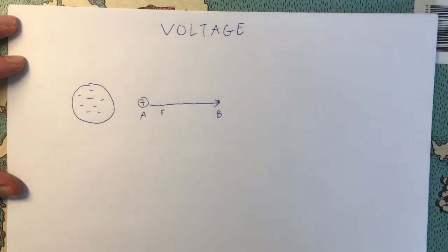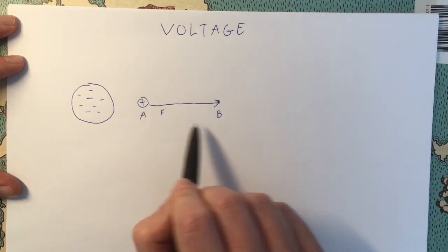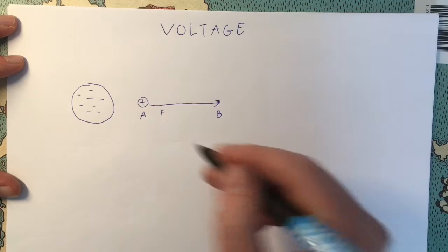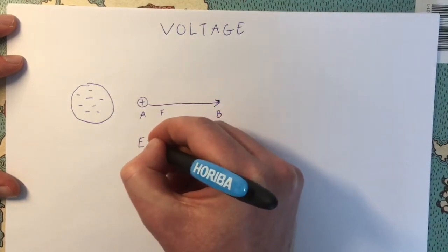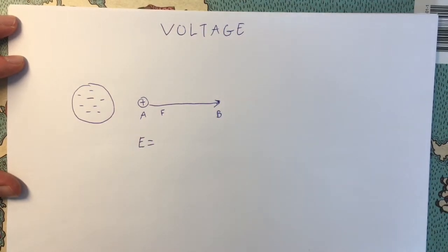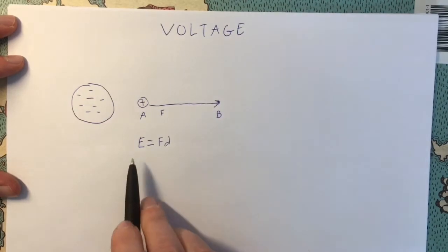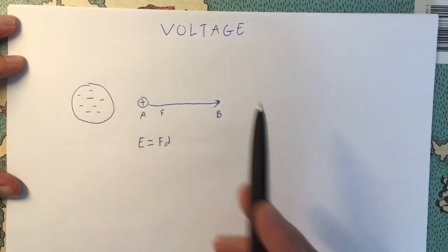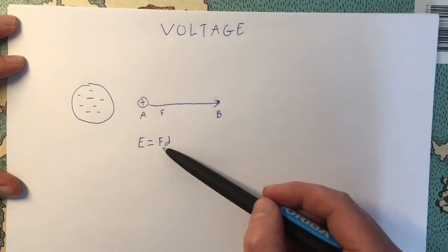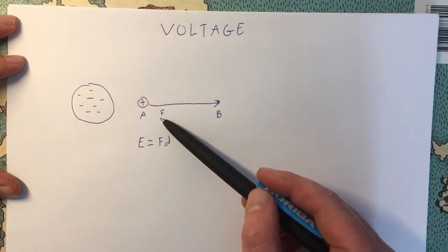In moving this positive charge, we're exerting a force over some distance, so we know that we're going to have some energy that we've had to put in. Energy would be the force times distance, so this is the simplified case for if this force doesn't change.